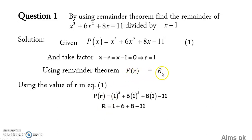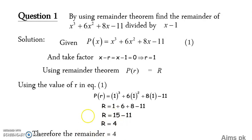After substituting r equals 1, the polynomial directly gives us the answer for R, which is our remainder, since we proved that P(r) equals capital R. After calculating, the sum of 8, 6, and 1 gives 15, minus 11, which equals 4. So our remainder is 4. Without applying long division, we have calculated the remainder of this polynomial divided by the linear factor (x minus 1).